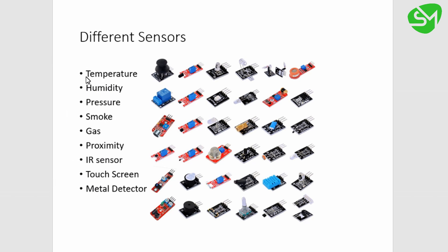Let's take the example of temperature. The temperature signal available in the environment is converted into equivalent electric signals. In case of humidity, the moisture content available in the air is converted into equivalent electric signals that can be sensed using any microcontroller.